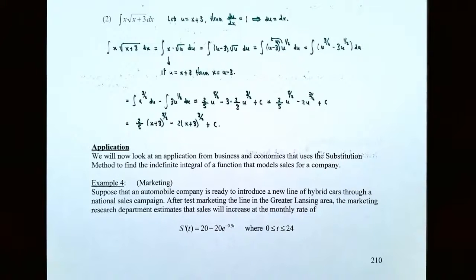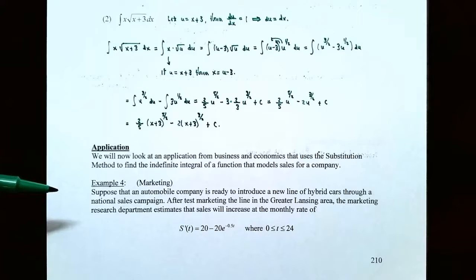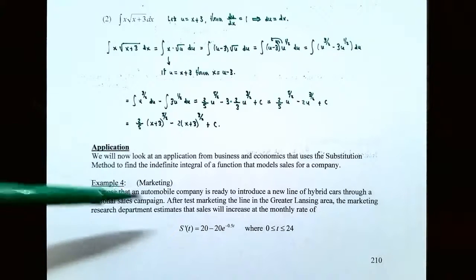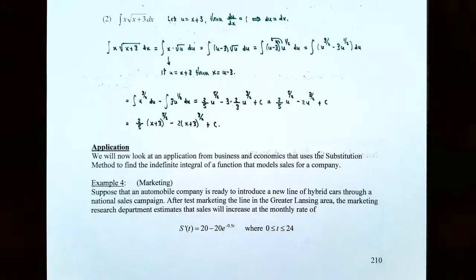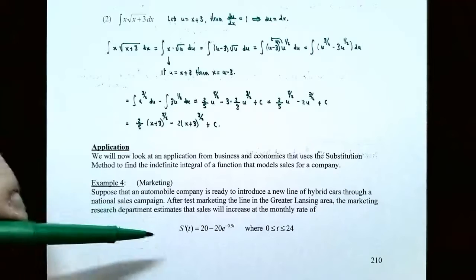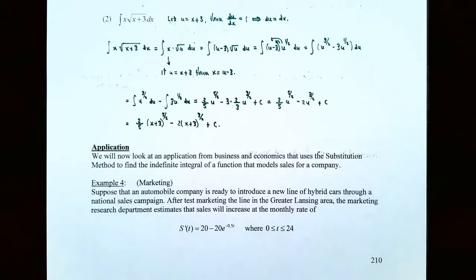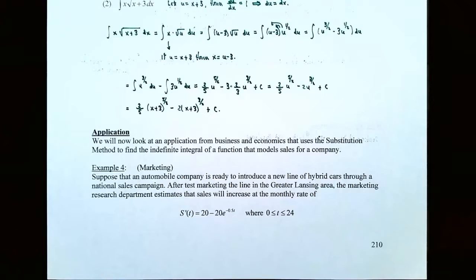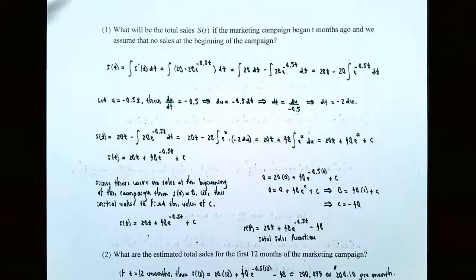Let's finish up with an application using the substitution method. Example 4, marketing: suppose that an automobile company is ready to introduce a new line of hybrid cars through a national sales campaign. After test marketing in the greater Lansing area, the marketing research department estimates that sales will increase at a monthly rate of S′(T) = 20 minus 20e^(−0.5T), where T is between 0 and 24 months. Number 1: what will be the total sales S(T) if the marketing campaign began T months ago, assuming no sales at the beginning?